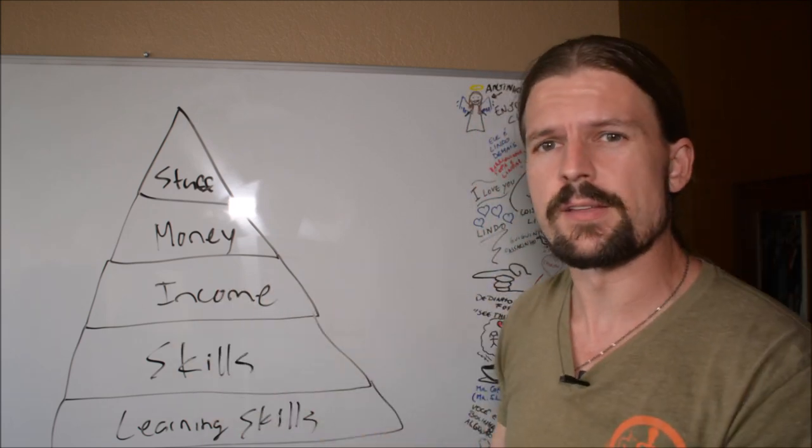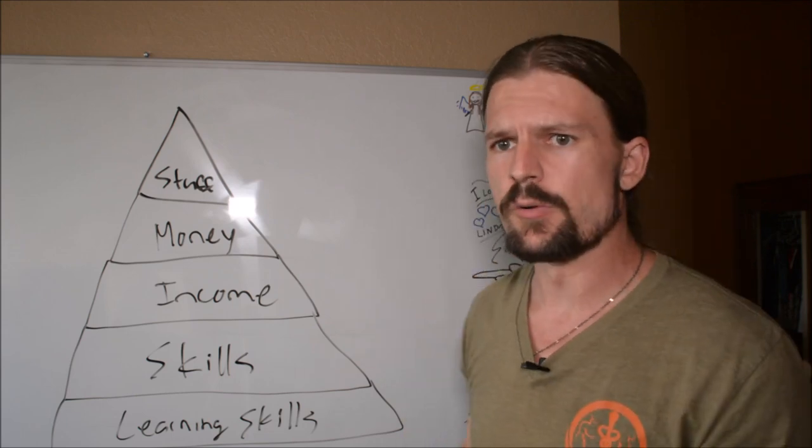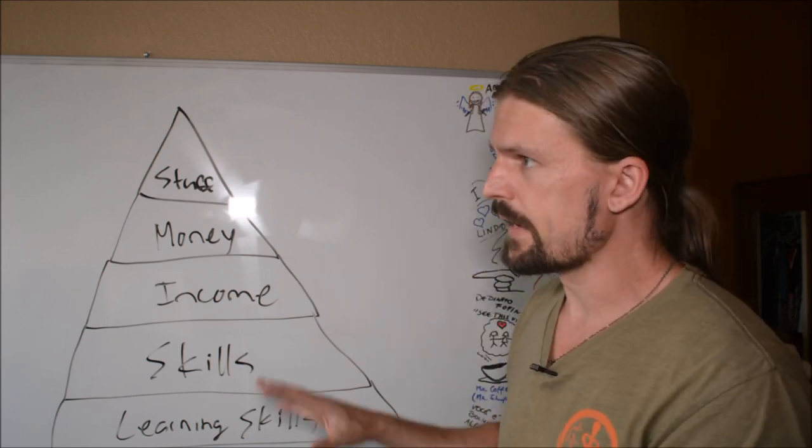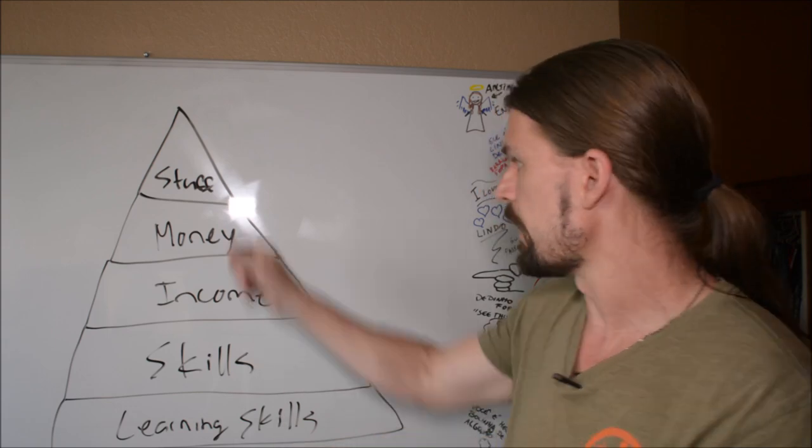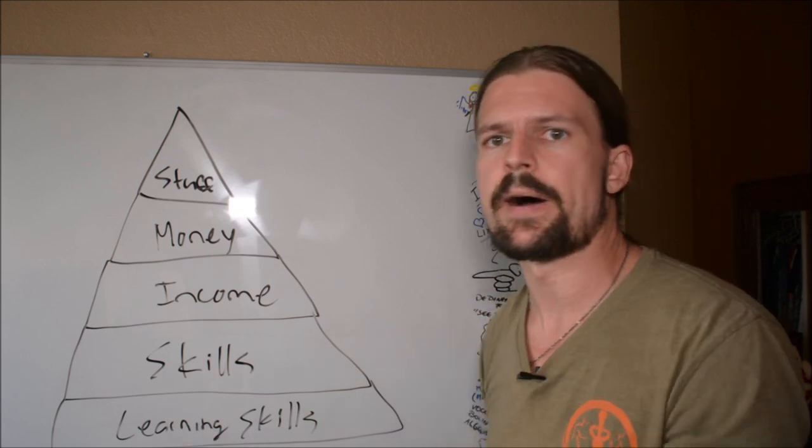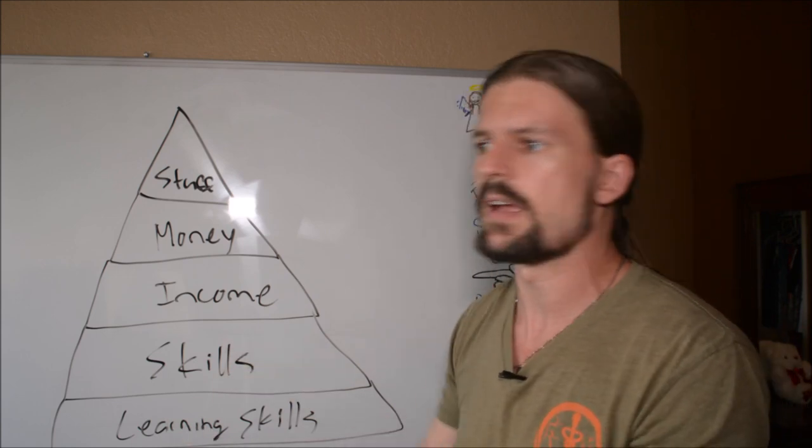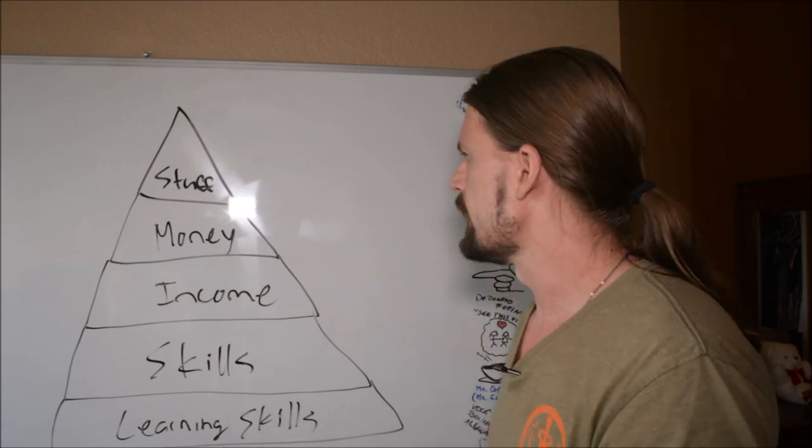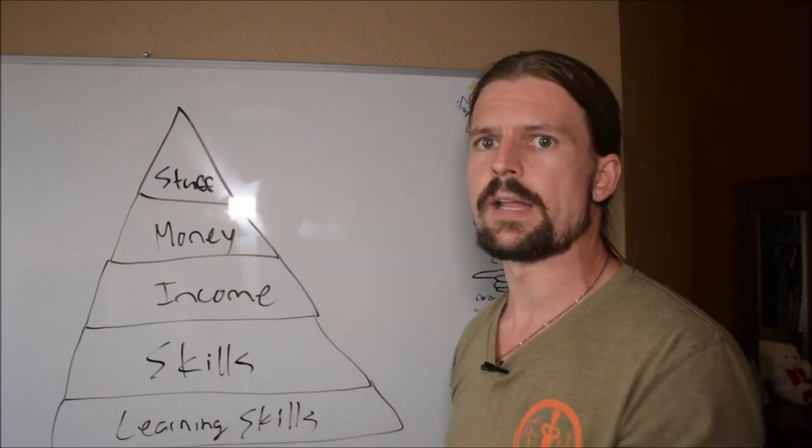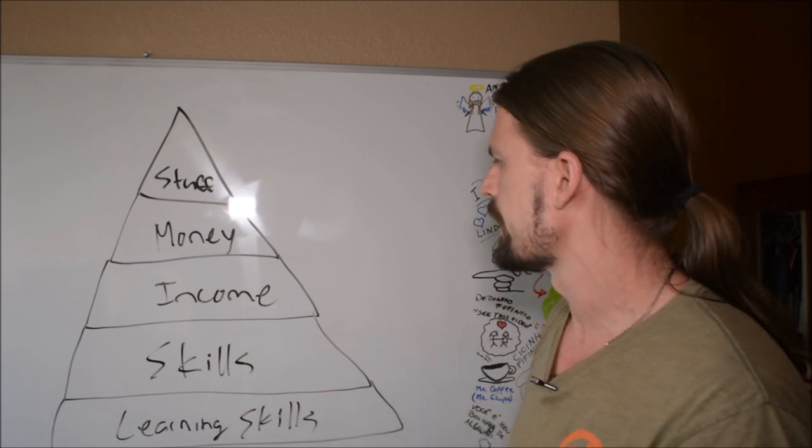This is everything that you need in order to be financially secure. And you can do things to make yourself more secure at every one of these five levels. At the stuff level, you could stockpile. You could save a bunch of dry food. You could save a bunch of ammo in your basement. At the money level, you could save money or you could save gold or Bitcoin or whatever you happen to use as money.